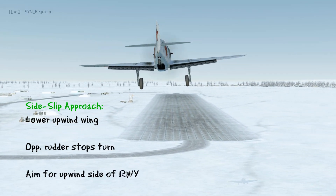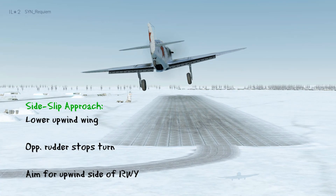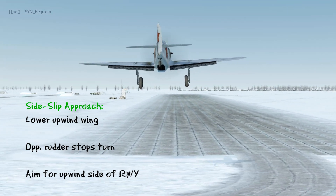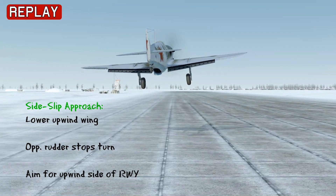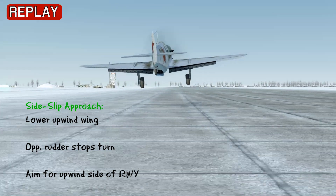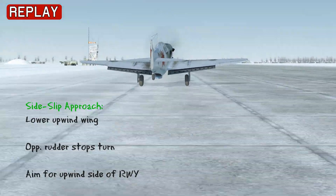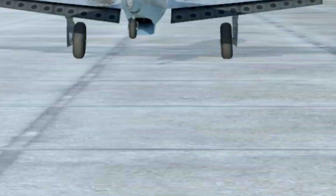As you're coming in, remember that you want to be aiming for the upwind side of the runway and that you want to touch down on the upwind wheel, and then as you touch down just apply left aileron to keep the upwind wing from rising and slow down to taxi.